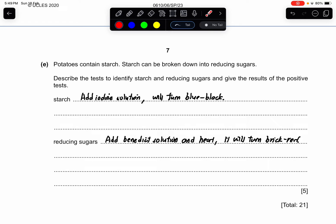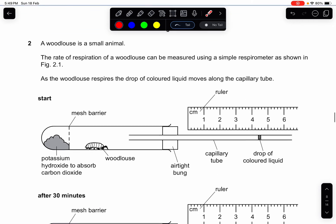E: Potatoes contain starch. Starch can be broken down into reducing sugars. Describe the test to identify starch and reducing sugar and give the result of the positive test. This is very simple. If you memorize this very in detail, this should be in your brain already. The starch test is by adding iodine solution and the positive test will turn blue-black in color. Reducing sugar: add Benedict solution and heat up. Heat is a very important keyword. This represents one mark. Heat up to 70 to 80 degrees and the result will turn to brick red color.